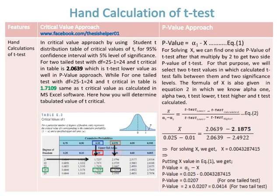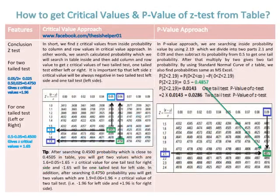To determine the tabulated t-critical value in the p-value approach, there are two equations. Using equation 2, we select two t-test values between which the calculated t-test falls, along with two significance levels, to find a value for x. Substituting x into equation 1 gives the one-tail test p-value of 0.0207. Multiplying by 2 gives the two-tail test p-value of 0.0414.